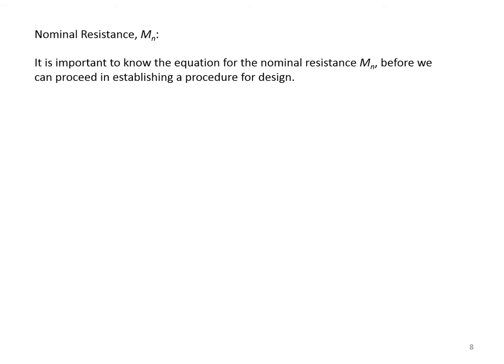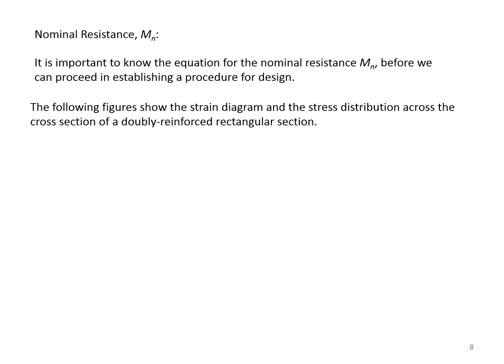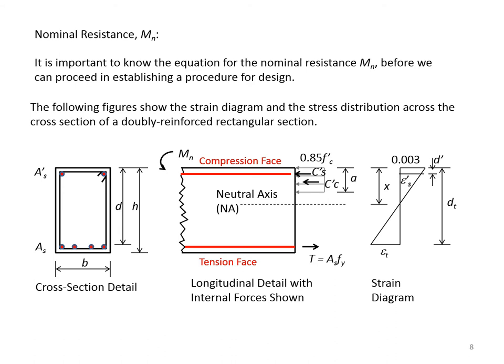It is important to know the equation for the nominal resistance M_n before we can proceed in establishing a design procedure. The following figures show the strain diagram and the stress distribution across the cross section of a doubly reinforced rectangular section. As you can see in the longitudinal detail, there are three forces shown: C'_s is the compression force on the compression steel, C'_c is the compression force on concrete, and T is the tension force in the tension steel. The strain at the extreme compressive fiber in concrete is 0.003. Note that if one layer of tension steel is used, d equals d_t.